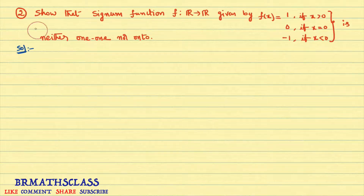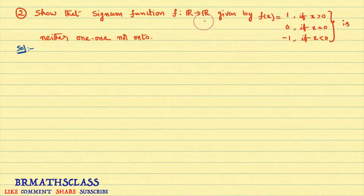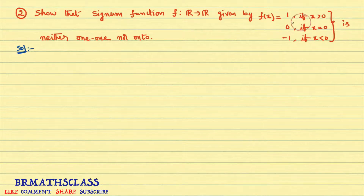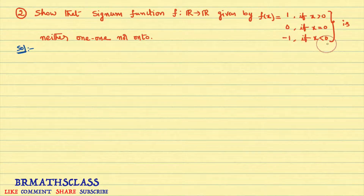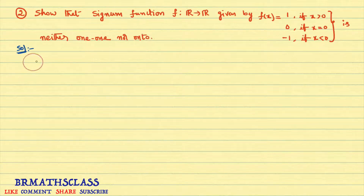Second problem: show that the signum function defined from the set of all real numbers to real numbers, given by f(x) = 1 whenever x > 0, f(x) = 0 whenever x = 0, and f(x) = -1 whenever x < 0, is neither one-one nor onto.